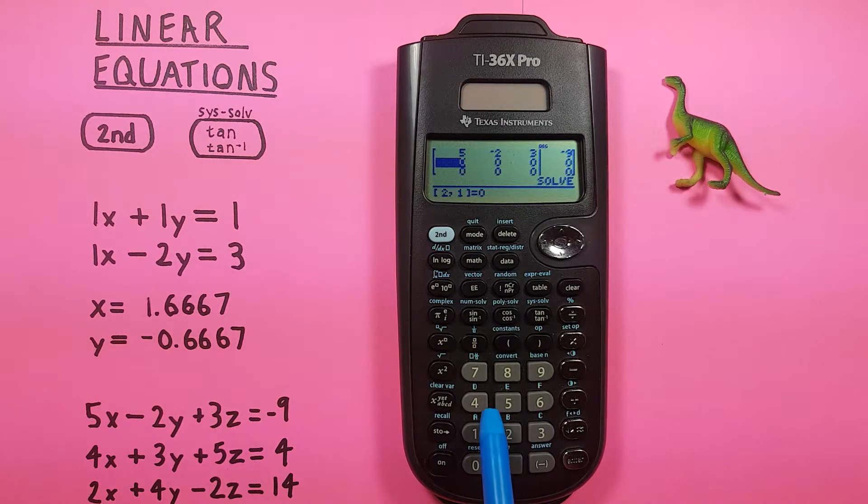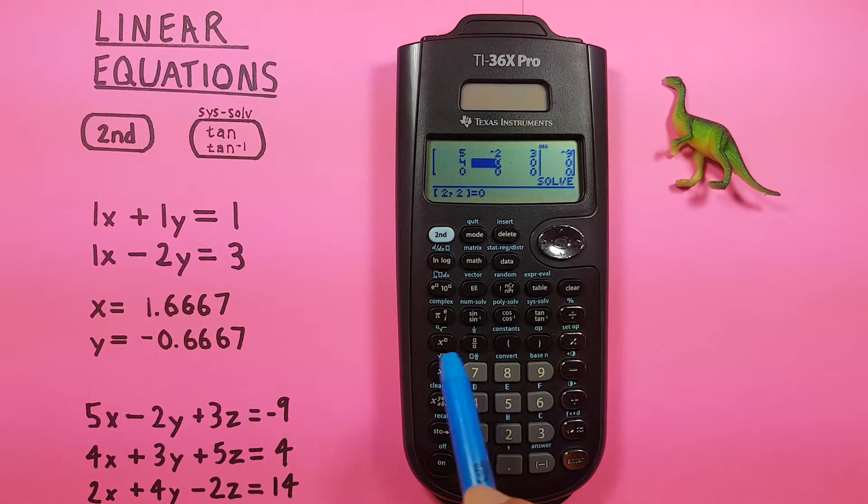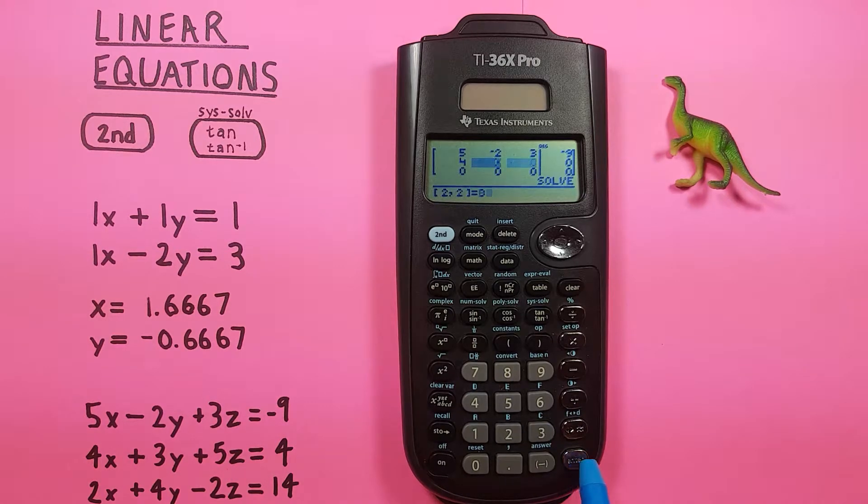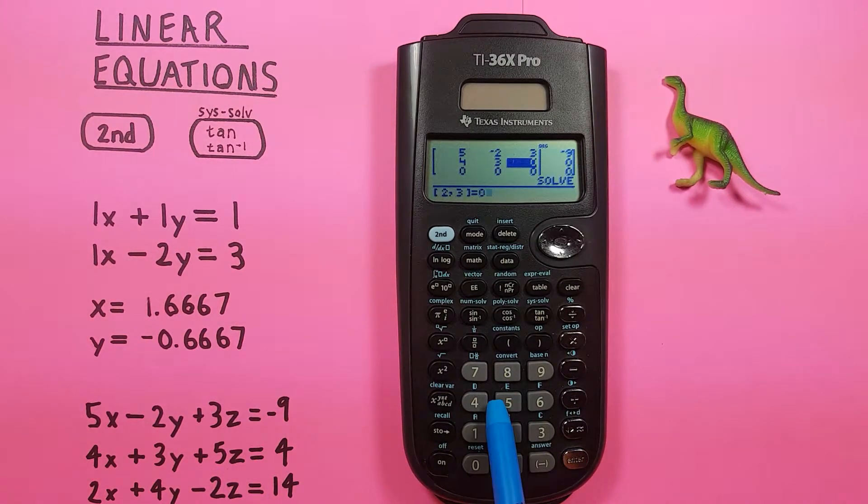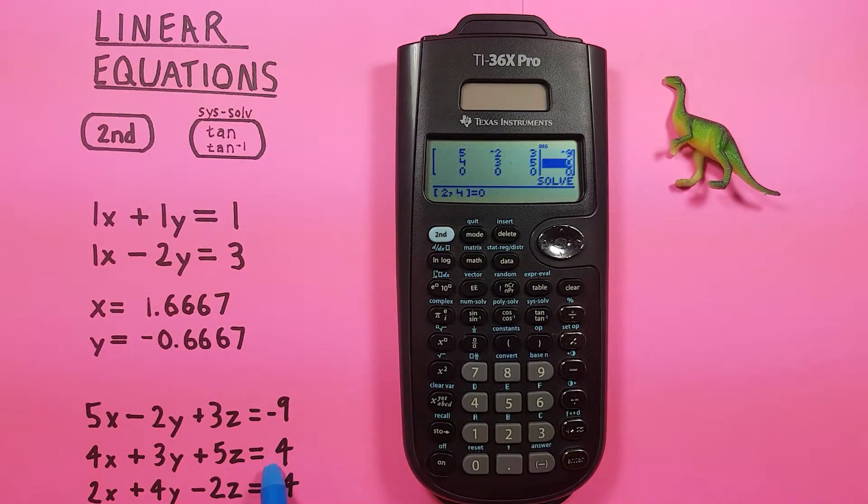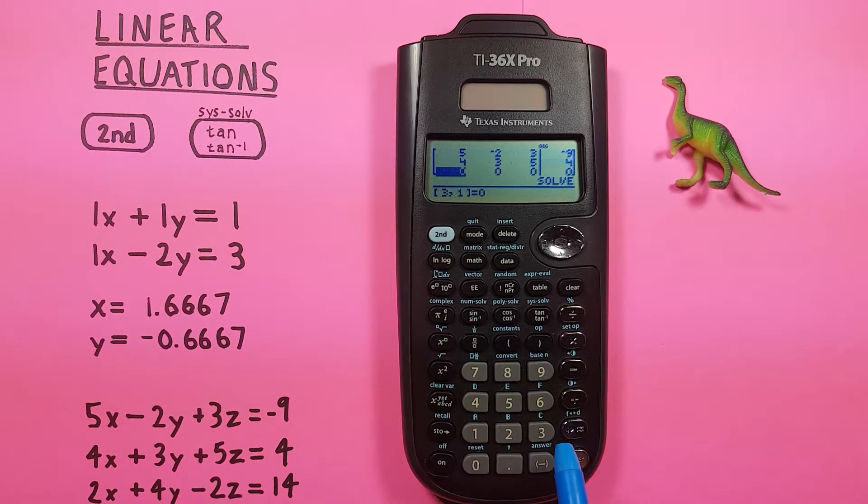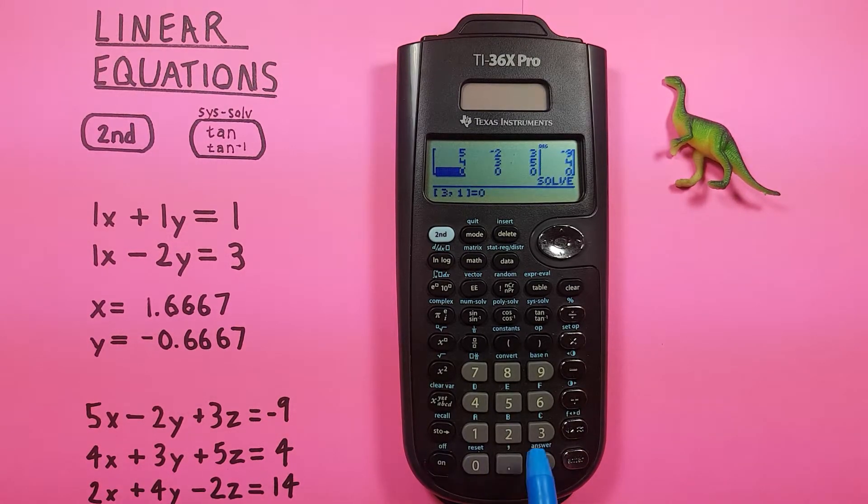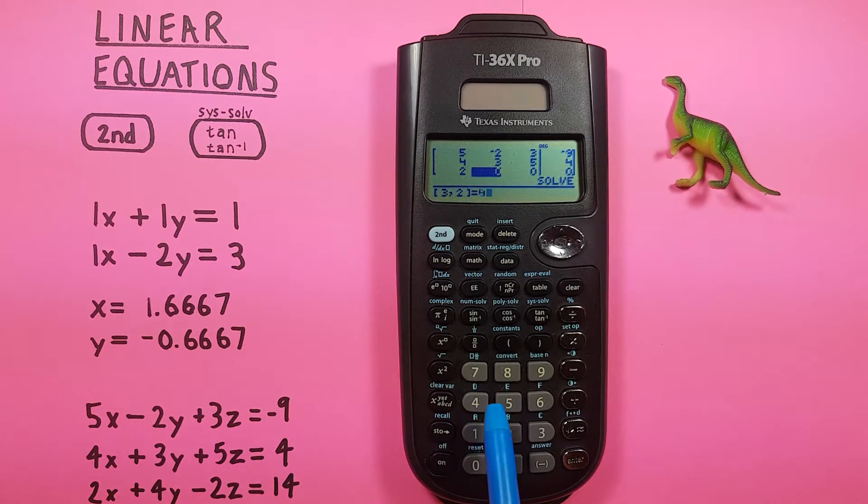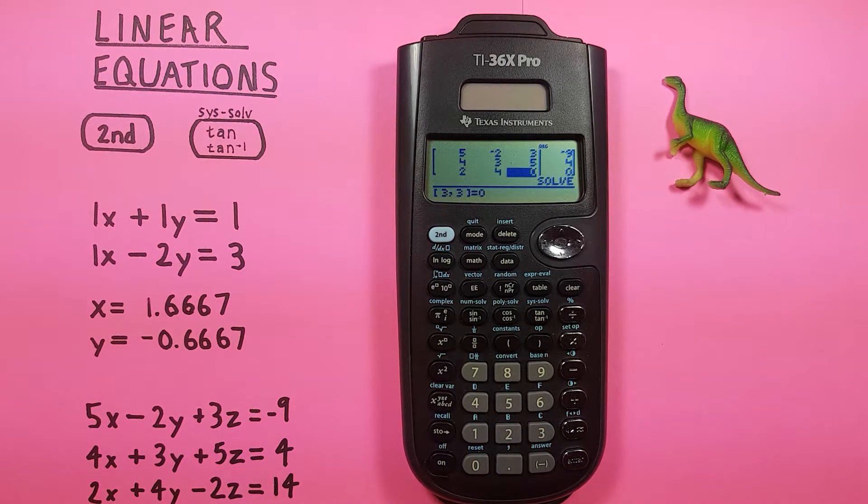We do that with the second one as well. So 4X plus 3 plus 5 equals 4. And then 2 plus 4. And then again, we have a negative. So the negative sign down here for our 2 equals 14. All right, we have all three of our equations entered now.